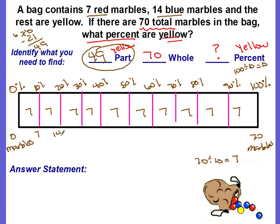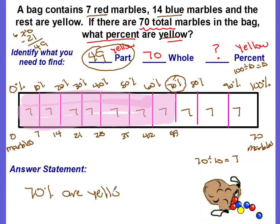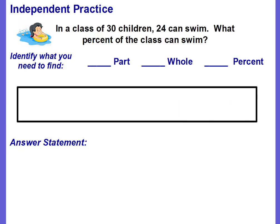Use the yellow part — 49 marbles — to find the percent. Count up: 7, 14, 21, 28, 35, 42, 49. Going straight up from 49, we're at 70 percent. The answer statement: 70% are yellow marbles. Now you're ready for your independent practice — good luck!